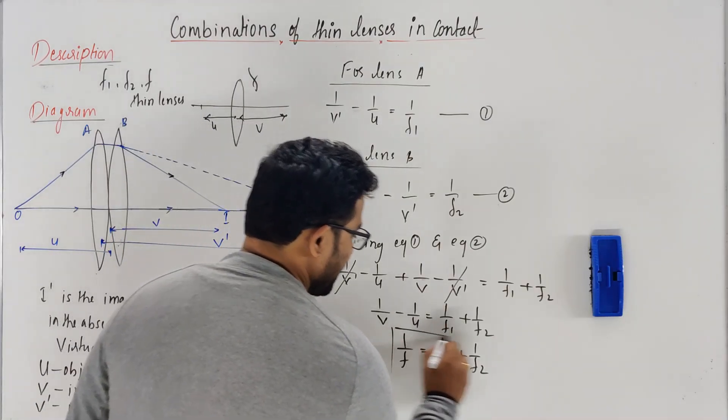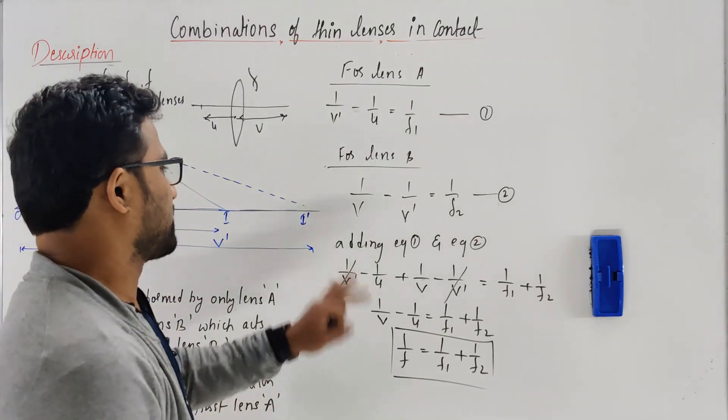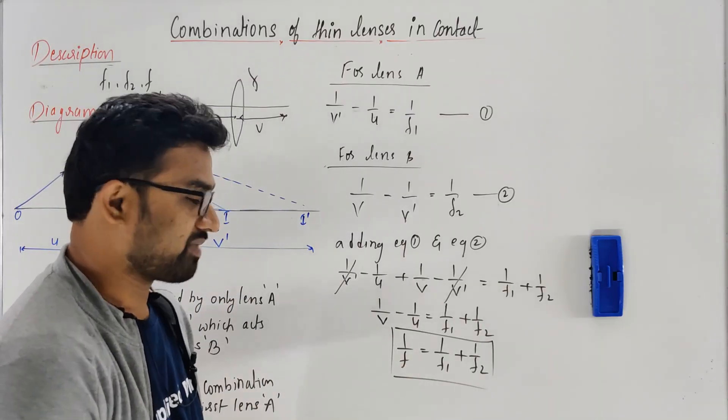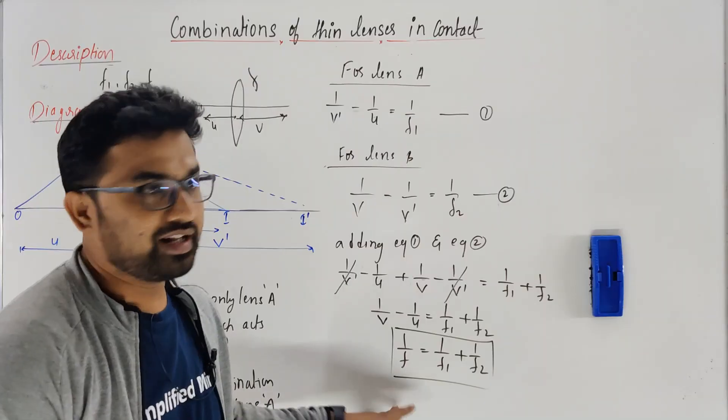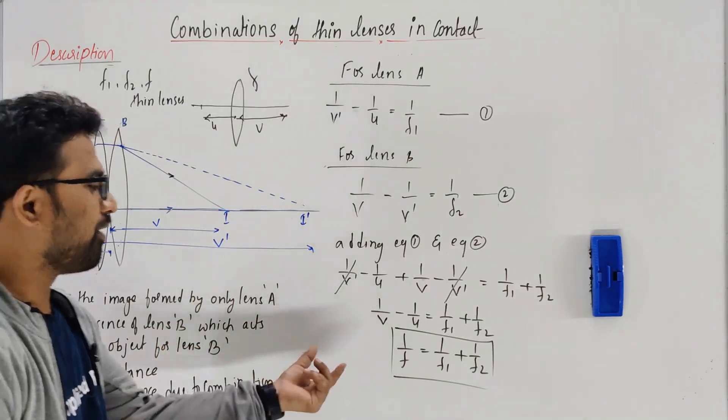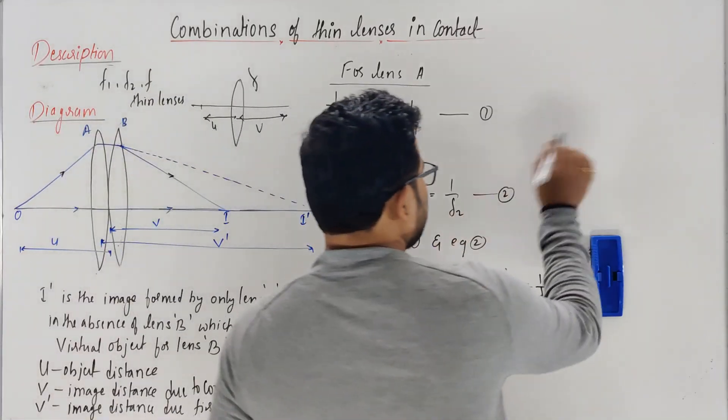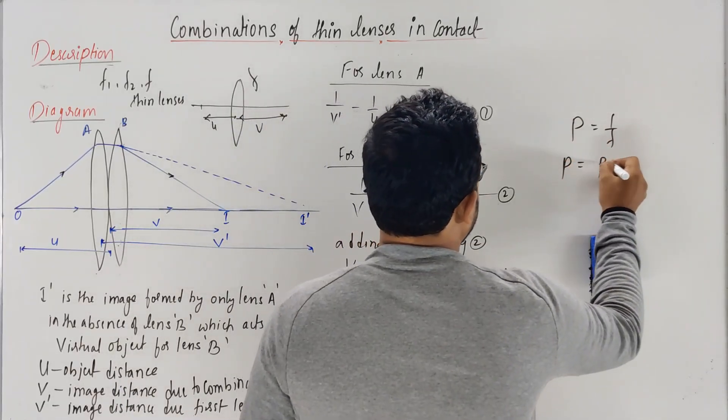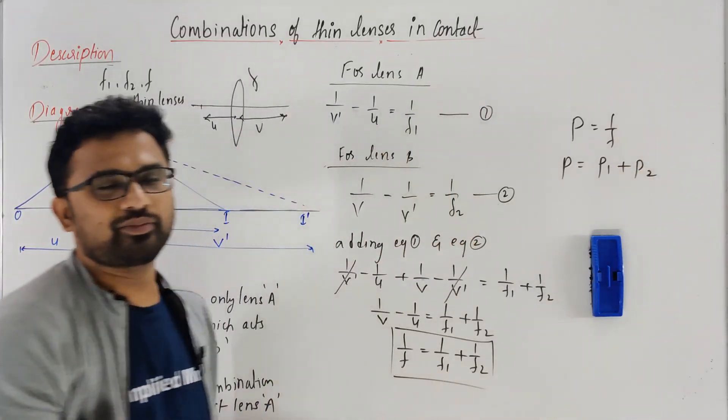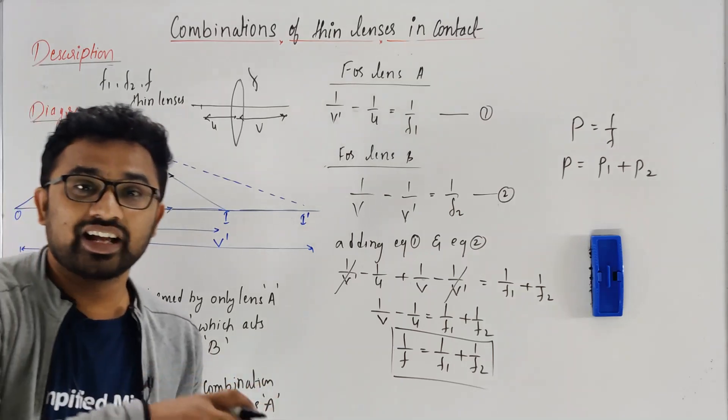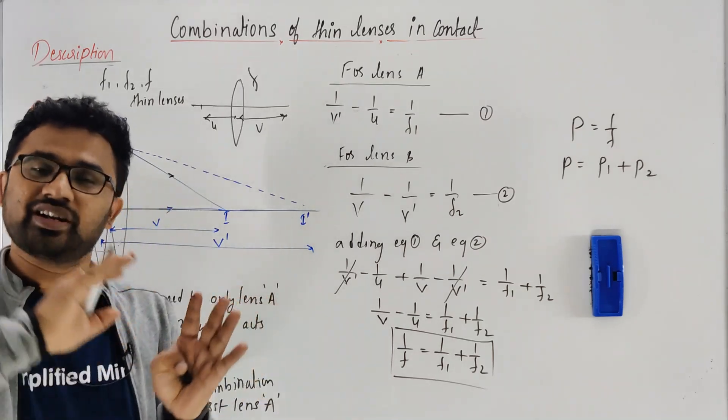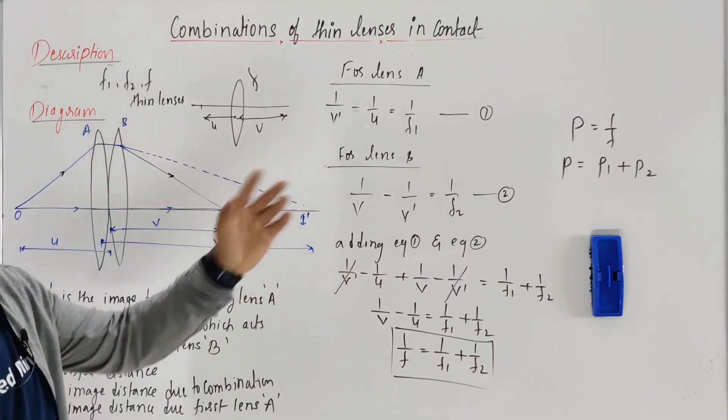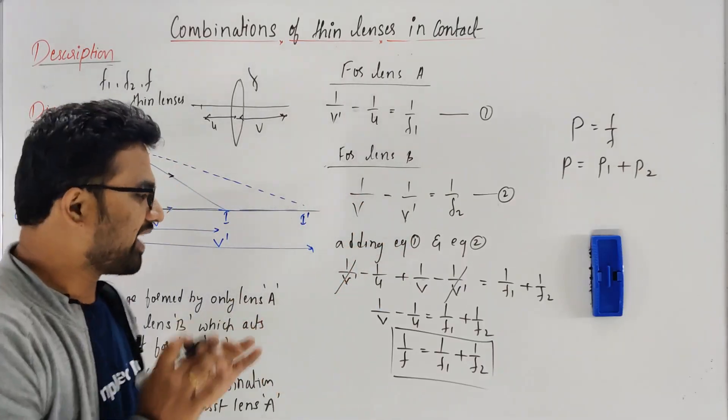It's a very simple derivation. In competitive exams they can keep changing these things - sometimes it will be plus, sometimes minus. Also, if you want to add power: power is 1 over focal length, so the total combination of power is p1 plus p2. Power is basically converging and diverging capacity. If I keep two lenses then the power will increase, so p becomes p1 plus p2.